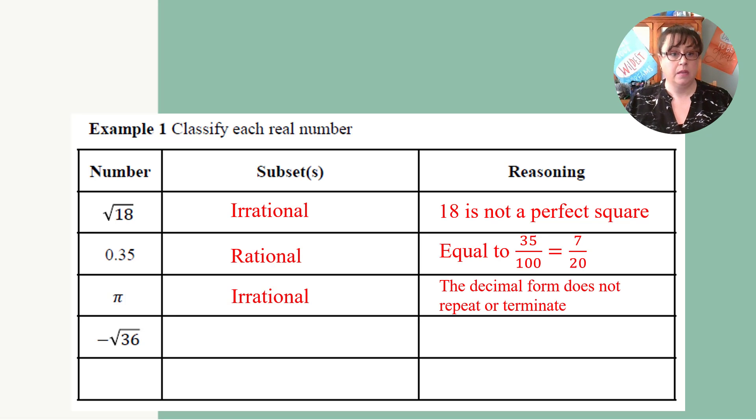And then if I have the opposite of the square root of 36. Well, I know that the square root of 36 is 6. So the opposite of 6 is negative 6. So this is a rational integer because it's equal to negative 6.